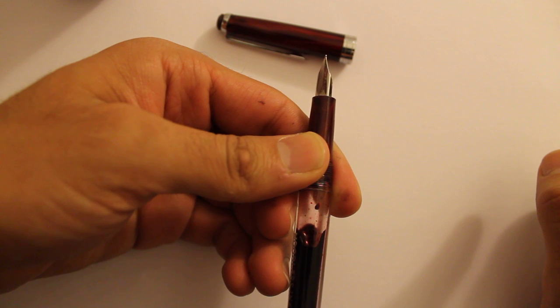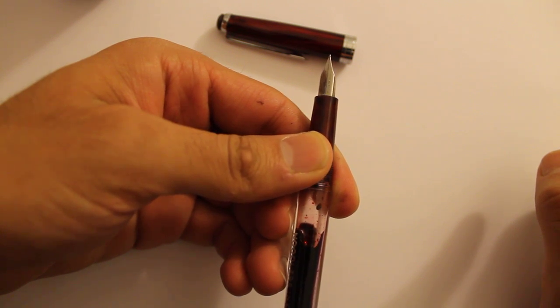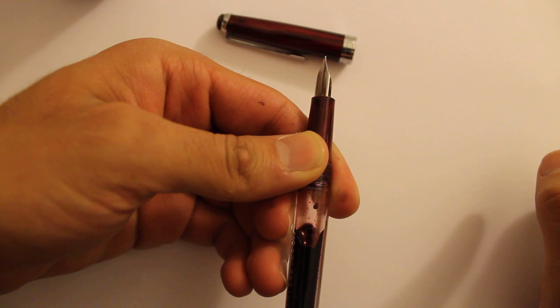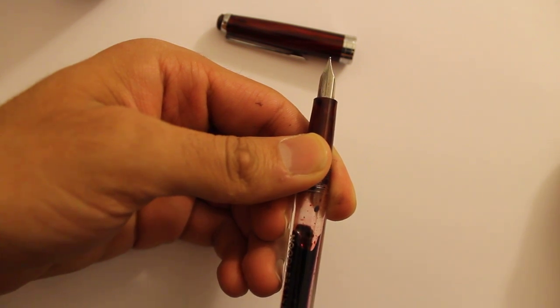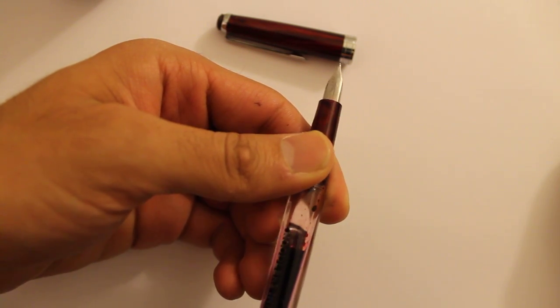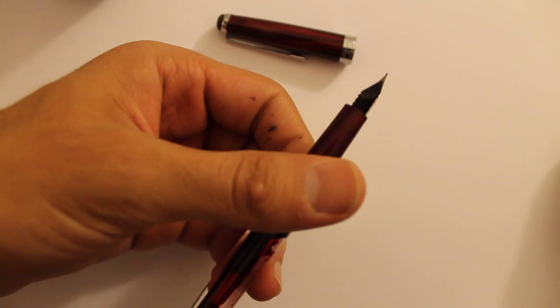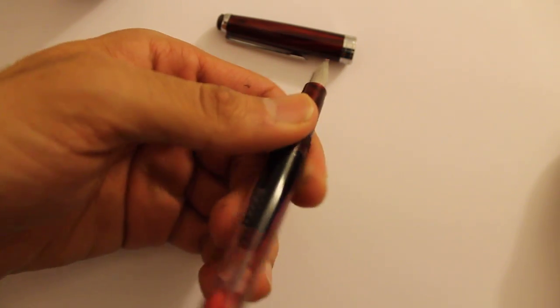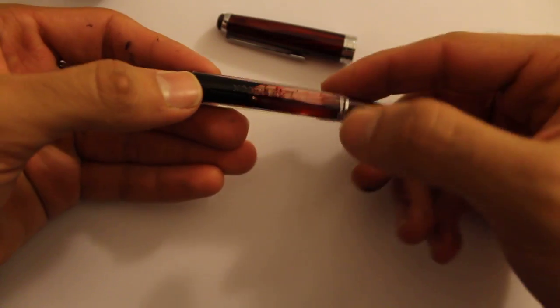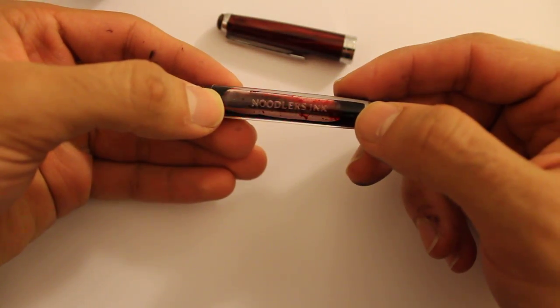On the right side it says ink company. Left side it says Noodler's, right side it says Ink Company. That's the name. It's a generic nib. It doesn't even say the size of it. And here in plastic it says Noodler's Ink if you can see it there.